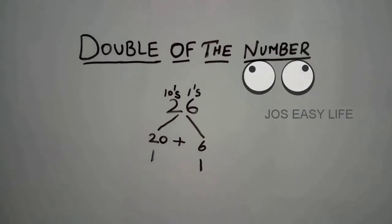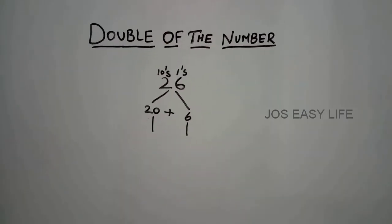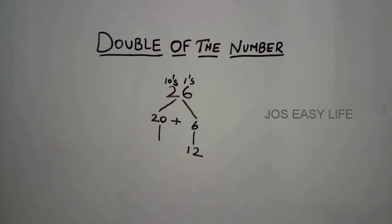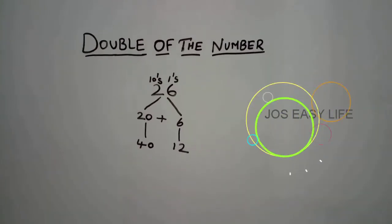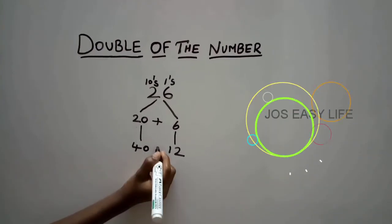Now, we have to find double of these numbers. Double of 6 is 12. Double of 20 is 40. Put an addition symbol over here.